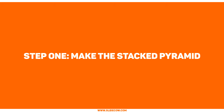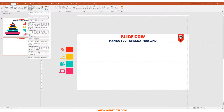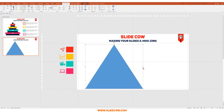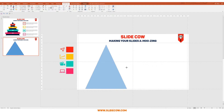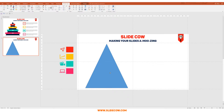Step 1: Make the stacked pyramid. Assuming you have a blank slide in front of you, the first thing you're going to do is go to Insert, then Shapes, and click on the Isosceles Triangle option. Hold Shift and blow up the triangle, then reduce the width but not the height, just a bit. Don't worry about positioning and sizing too much — we can always change that later.